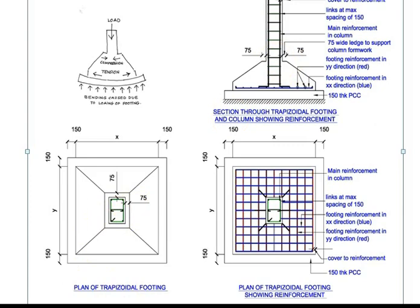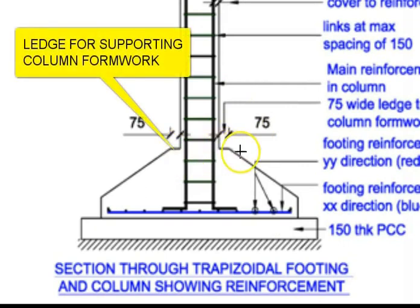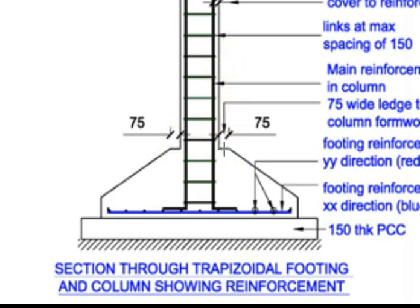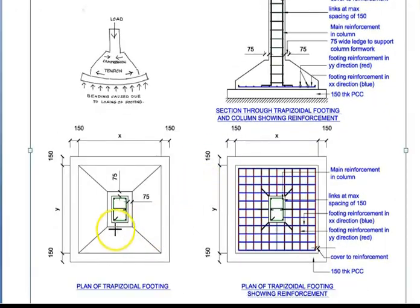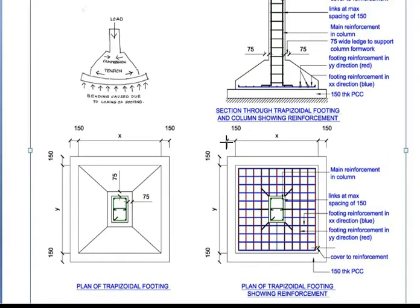If we zoom into the trapezoidal part, at the top there is a horizontal ledge about 75 mm in width. The purpose of this ledge is that when the column is to be constructed, the formwork for the column is erected and supported by this ledge. In the plan, you can see this ledge formed on all four sides of the column position, which is used to support the column formwork.